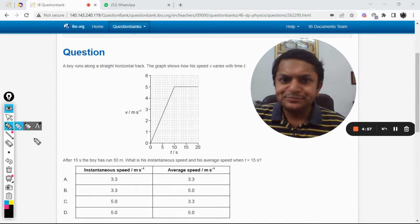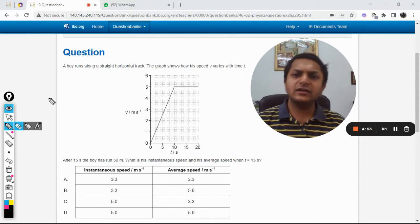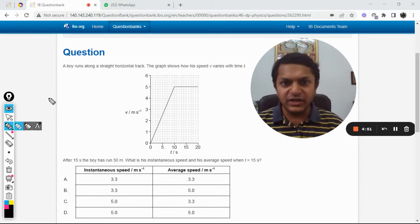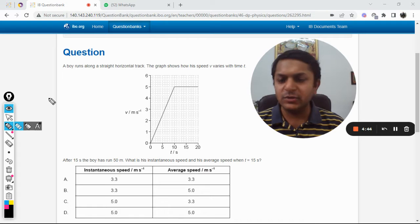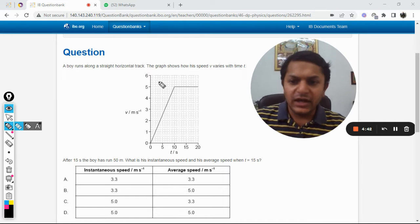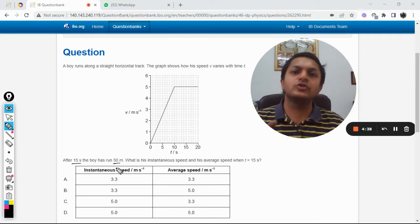In this question, a boy runs along a straight horizontal track. The graph shows how his speed v varies with time t. This is the instantaneous velocity - you can find at what time the body is moving with what velocity. The graph shows that after 15 seconds, the boy has run 50 meters total distance.